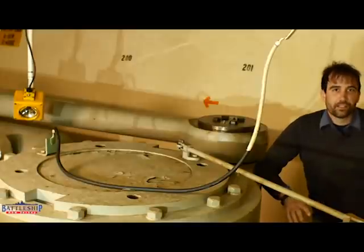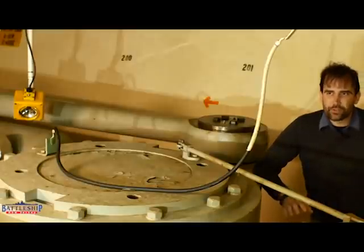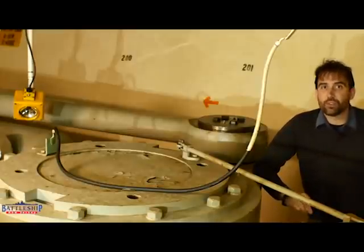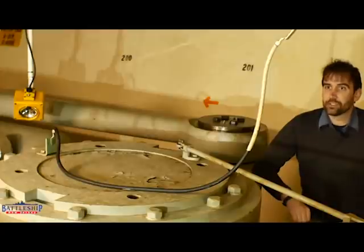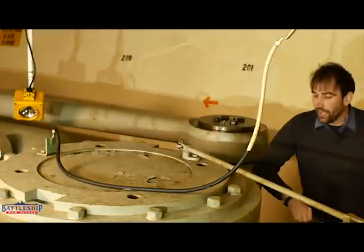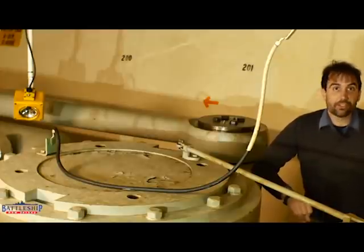So you see the Iowa class battleships have a larger tactical diameter than the other, older battleships and even contemporary aircraft carriers. Why do people say that they're so maneuverable? Well, compared to American destroyers, which have really, really long length to beam ratios and are not maneuverable, especially when you compare them to contemporary British destroyers, the Iowa class battleship can turn tighter.